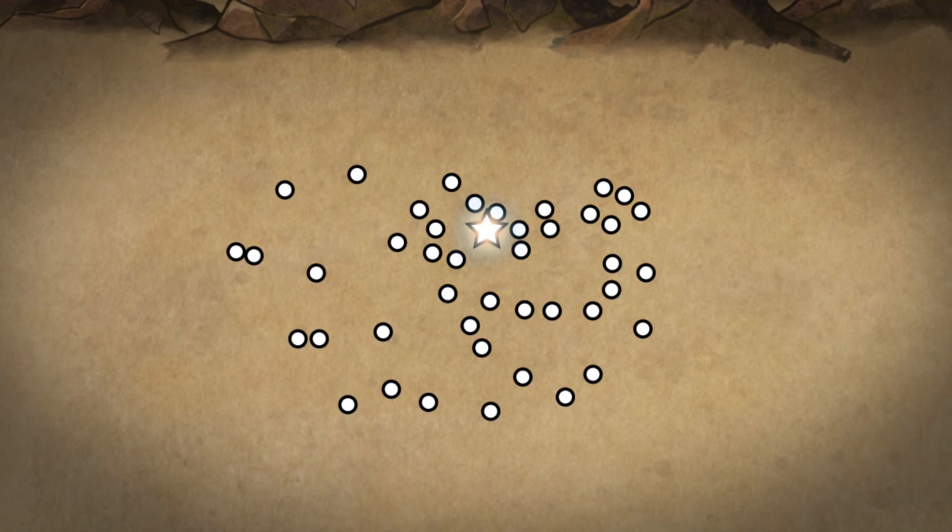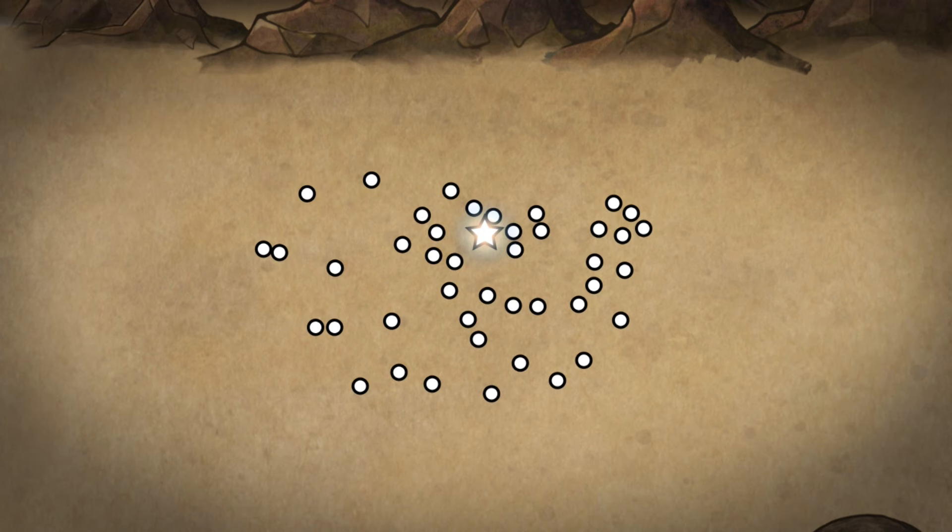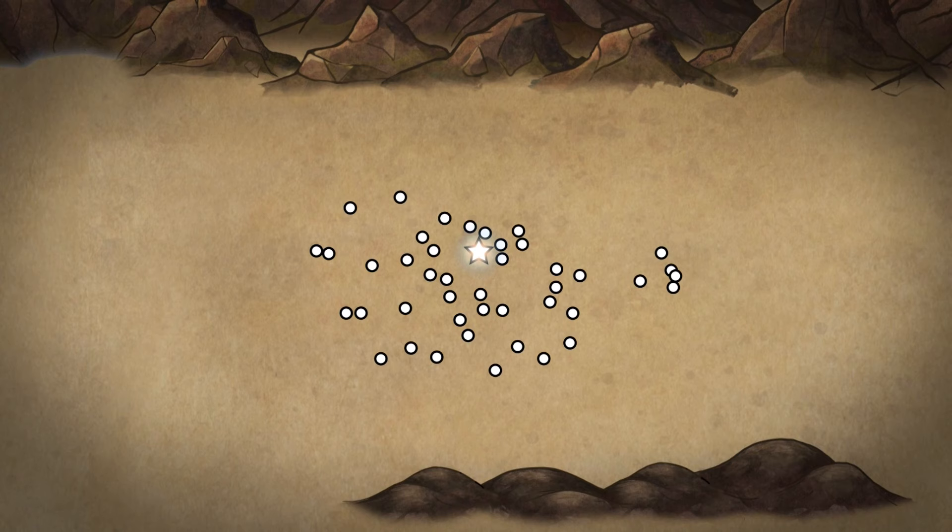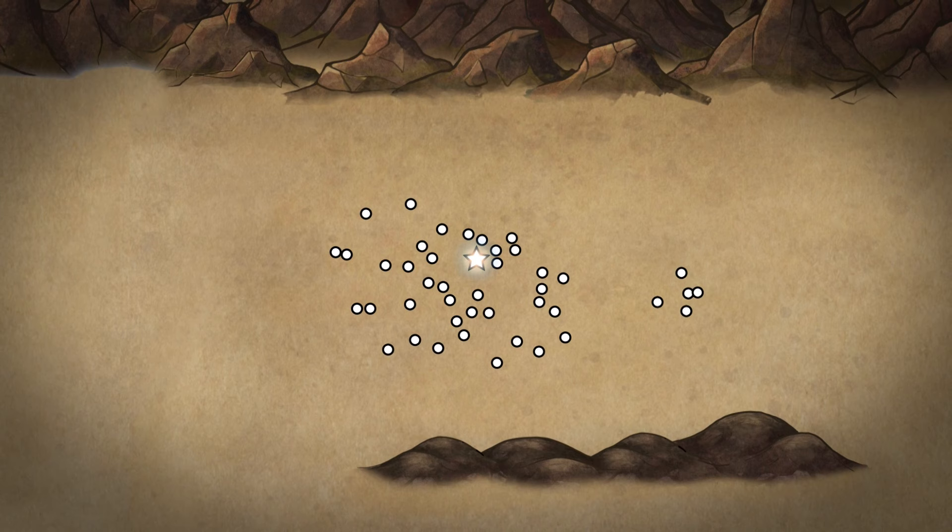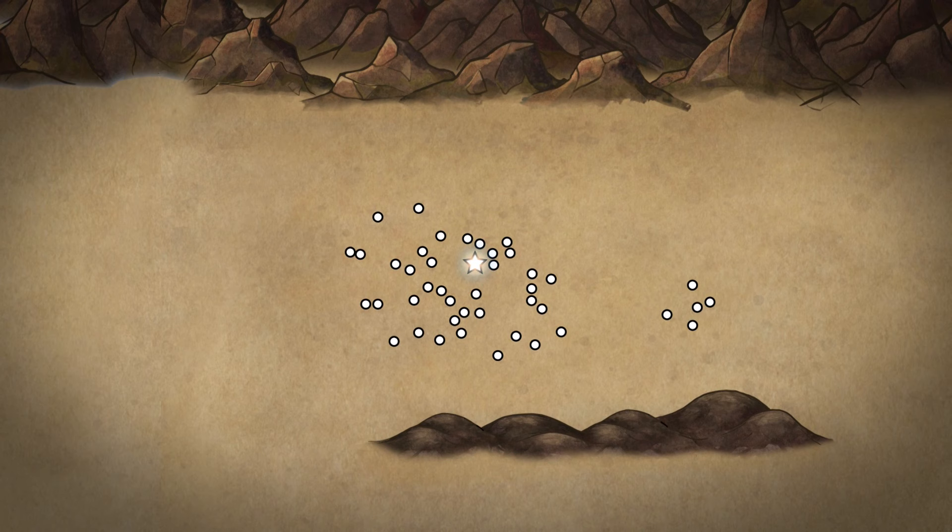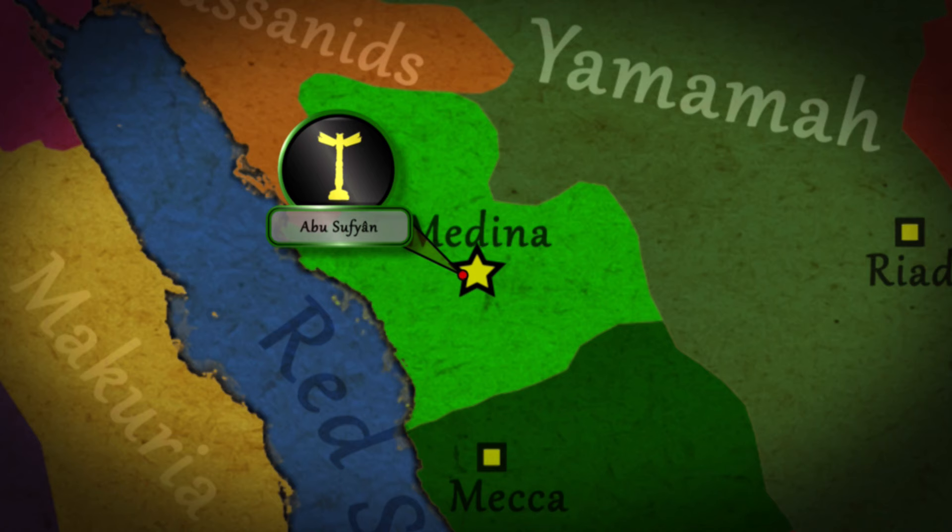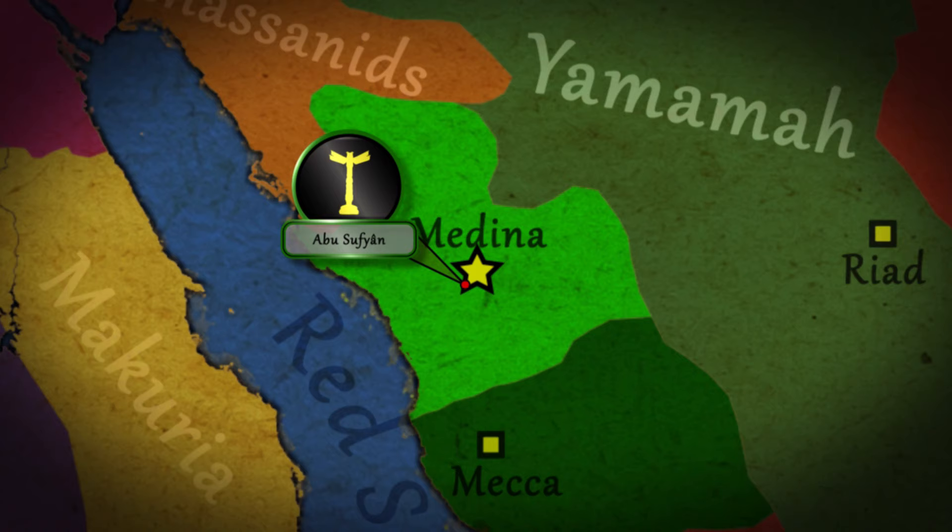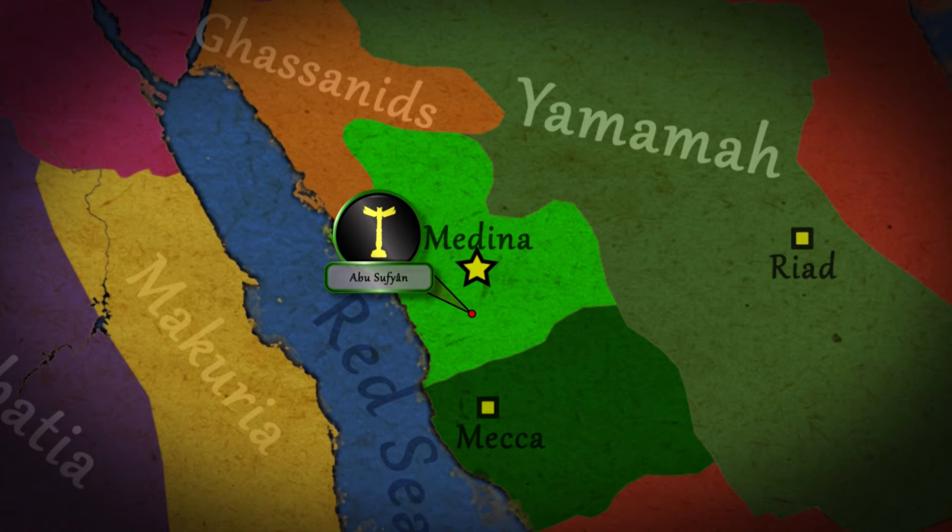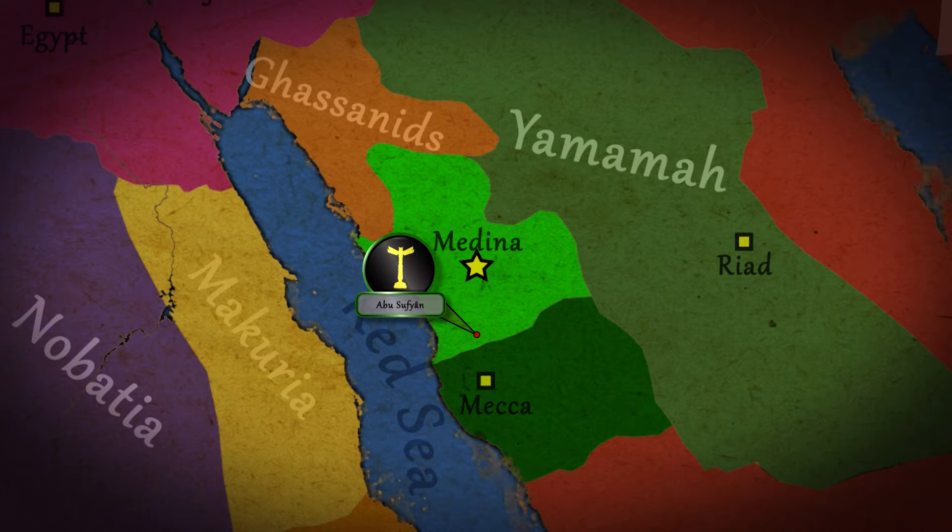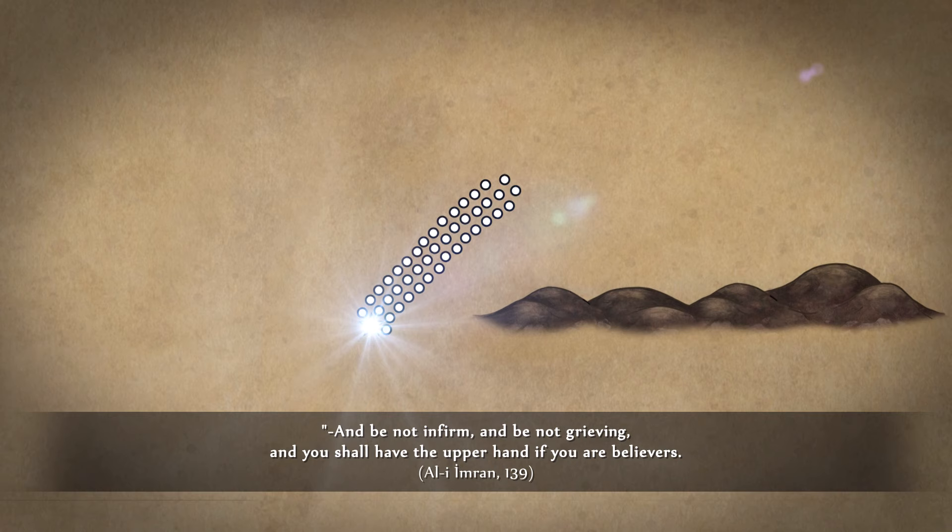In Uhud, on the one hand, a new great ecstasy of faith, patience, trust, submission, and consent to fate were displayed at the peak level. On the other hand, very painful tests were also faced due to weaknesses such as the momentary ignorance and inclination to the world. The negligence shown in carrying out the command of Allah's messenger changed the course of the war in an instant and caused the victory to be delayed. The mistakes of a few people resulted in everyone getting into trouble. The polytheists were given a deceptive victory that would have no practical consequences. With this deceptive victory, the hatred and anger that had accumulated in the hearts of the polytheists since Badr had calmed down, and their violence and coldness towards Islam had decreased over time. And be not infirm, and be not grieving, and you shall have the upper hand if you are believers.